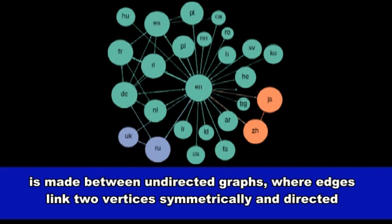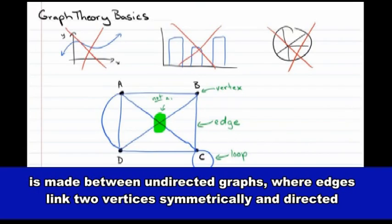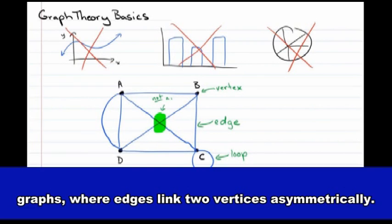A distinction is made between undirected graphs, where edges link two vertices symmetrically, and directed graphs, where edges link two vertices asymmetrically.